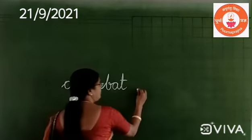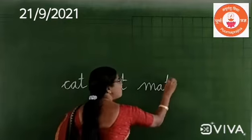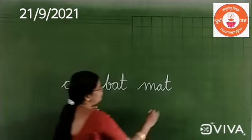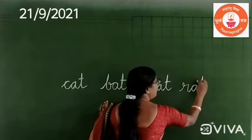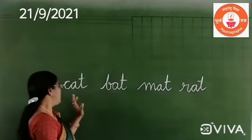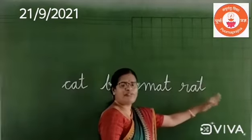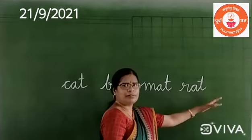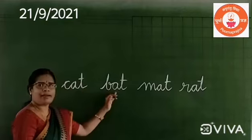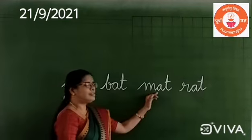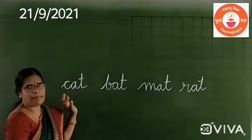Write one more. Mat. Rat. See — cat, bat, mat, rat. At, at, at, at. All the ending sounds are same — 'at', 'at', 'at', 'at'.